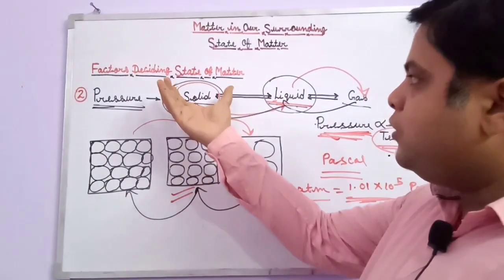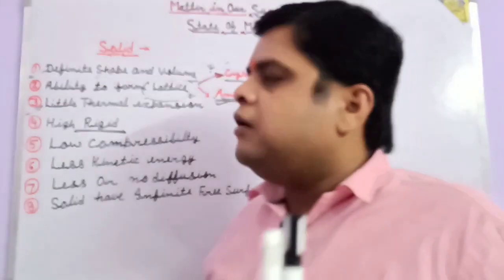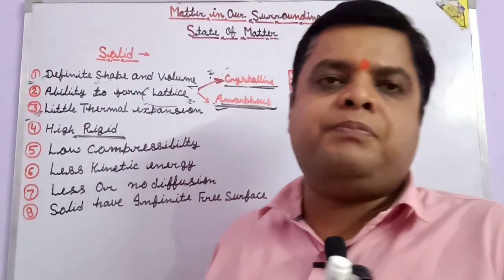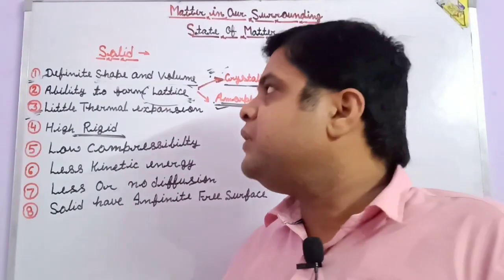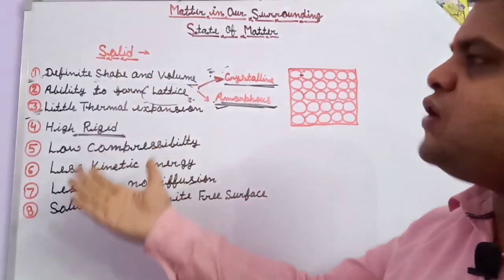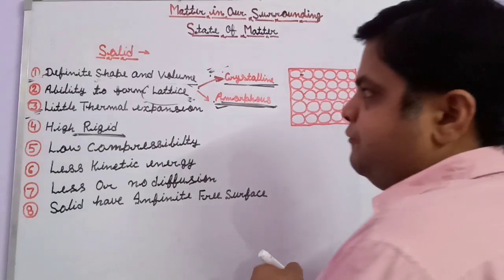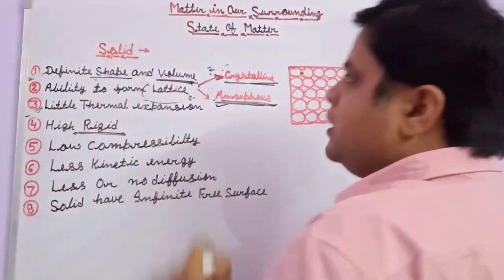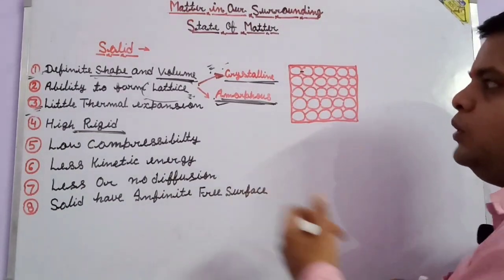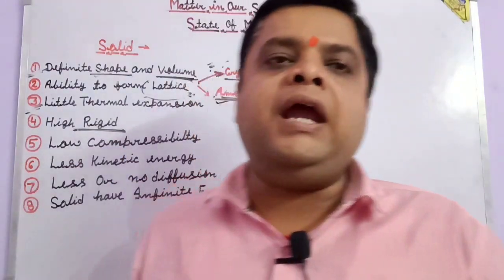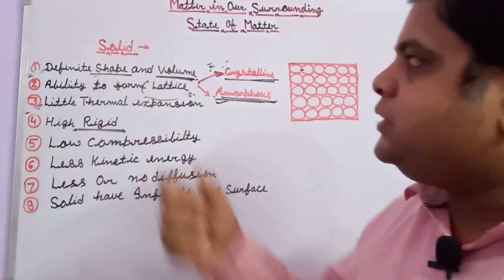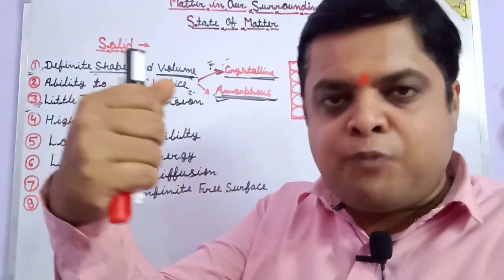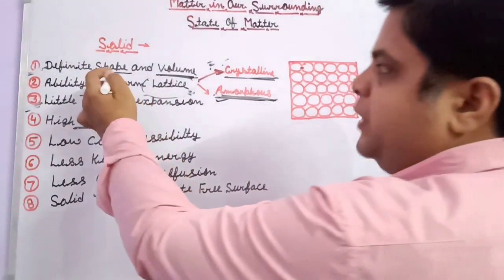Pressure also creates an important factor on the state of matter. After explaining the factors of state of matter, we discussed temperature, pressure, inter-particle space, and inter-particle force. Next, one state of matter is solid. Solid conditions: first, definite shape and volume. Solids have definite shape and volume. The inter-particle force is very high and inter-particle space is very less.